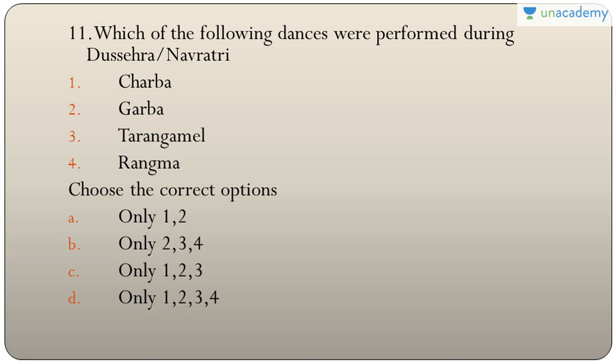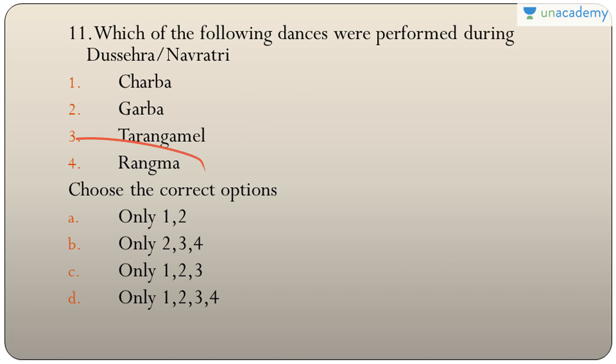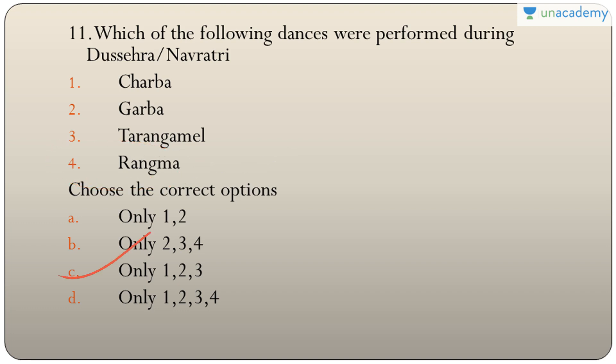Question eleven: which dances are performed during Dashara or Navratri — Charba, Garba, Tarangamal, Rangma? Charba, Garba, and Tarangamal are performed, but Rangma is not — it is a martial dance of Nagaland. The answer is C — only one, two, and three. Charba is a folk dance of Himachal Pradesh and Garba of Gujarat.